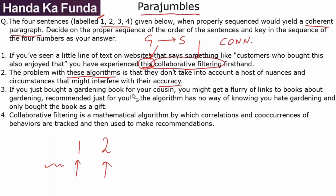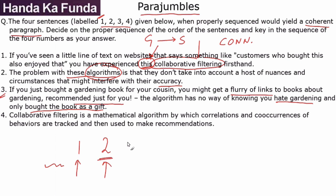Statement three says: 'If you bought a gardening book for your cousin, you might get a flurry of links to books about gardening recommended just for you. The algorithm has no way of knowing that you hate gardening and only bought this book as a gift.' This means statement three is an example of the problem with the algorithm — showing how it failed. So the problems were introduced in statement two, and an example of that failure is given in statement three.